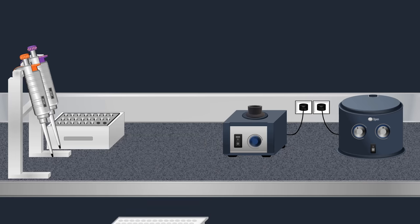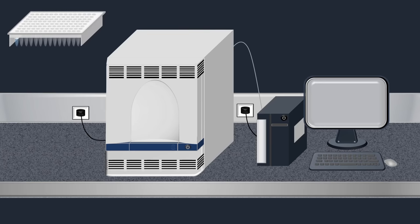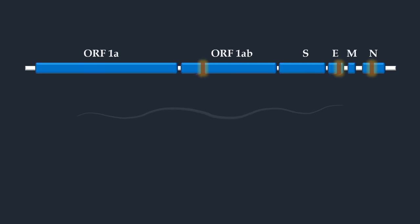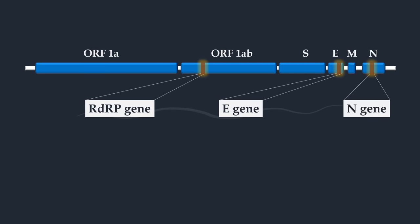Next, the plate is placed in a PCR machine, which is essentially a thermal cycler. Real-time RT-PCR is used for the detection of the new coronavirus 2019 by the amplification of target sequences in the RDRP gene, the E gene, and the N gene.